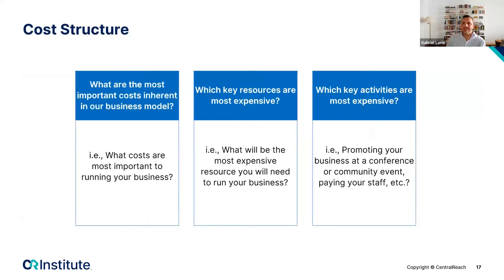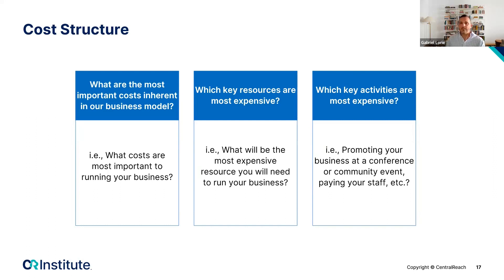Next, your cost structure. What are the most important costs inherent to your business model? This might be training new staff like RBTs, or paying rent if you're center-based. Which key resources and activities are most expensive? Training staff can be costly, and sometimes you might have a lot of turnover — that can be very costly for businesses that need to train and replace staff, potentially moving staff from certain areas to help train new ones.